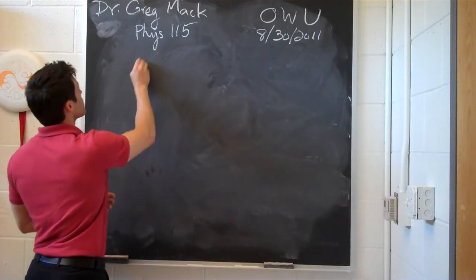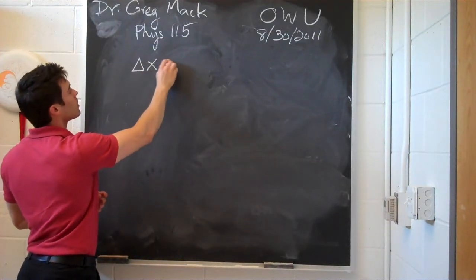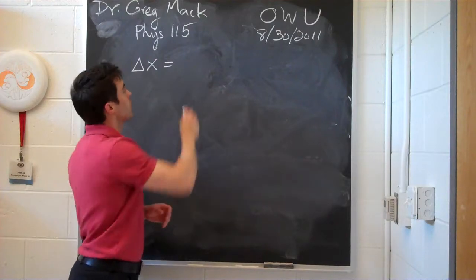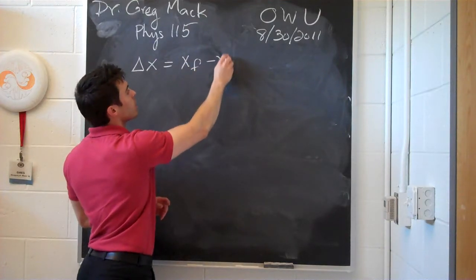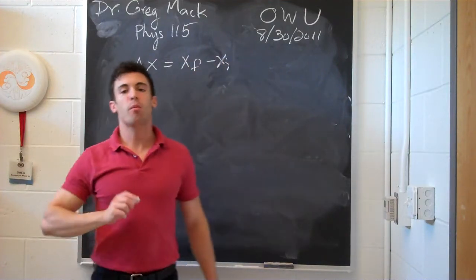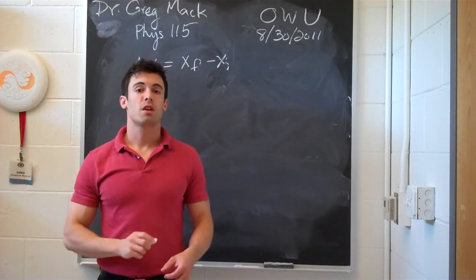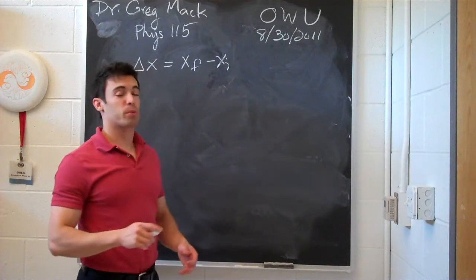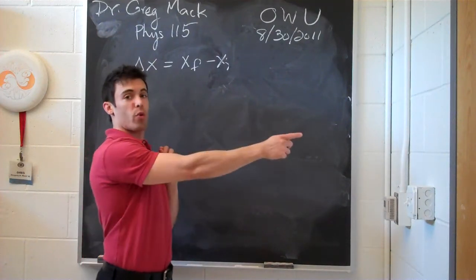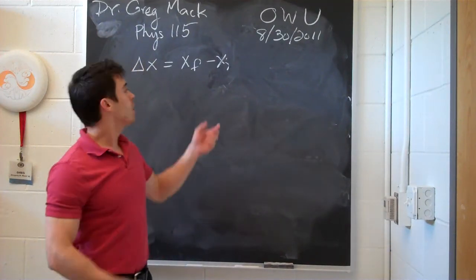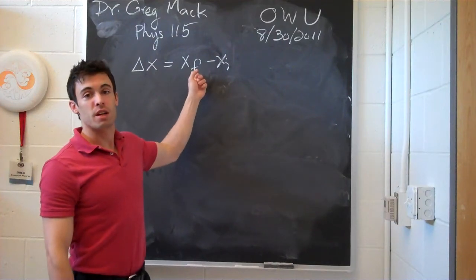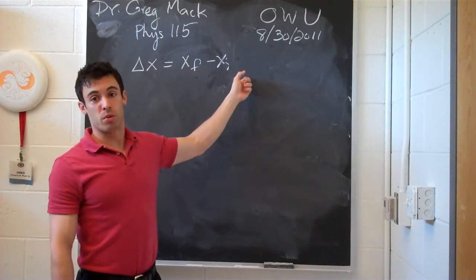Displacement is how much an object's position has changed. Remember, it's very different from distance in that you could have a displacement of zero if it goes somewhere and comes back to the exact same spot because its final position is the exact same as its initial position.